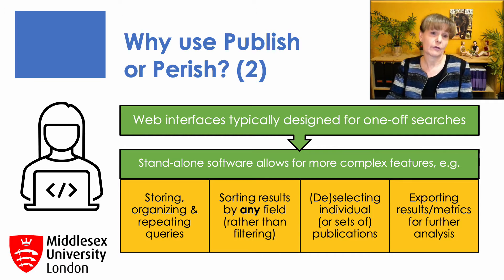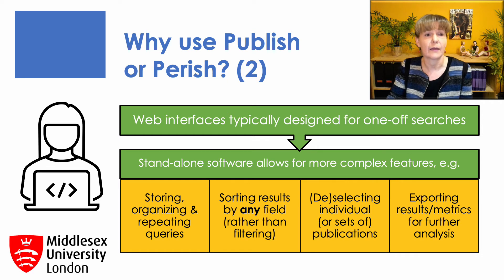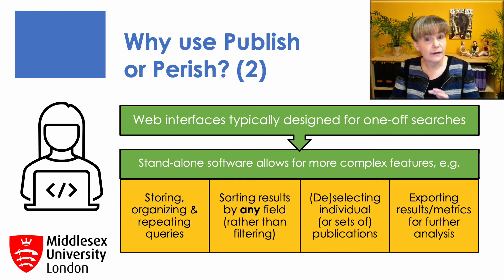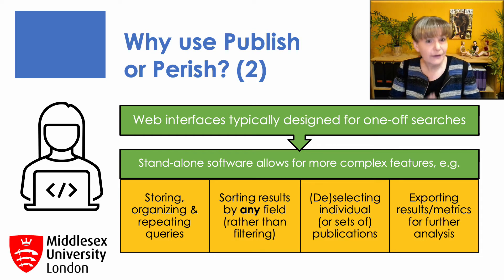Standalone software allows for more complex features. Here are some of the things you can do in Publish or Perish that are not possible or far more difficult in most web interfaces: first, storing, organizing and repeating queries again and again; second, sorting the results by any field rather than filtering them; third, selecting or deselecting individual or sets of publications; and finally, flexibly exporting the results and metrics for further analysis in, for instance, Excel or statistical programs. All this makes Publish or Perish far more suitable for those wanting to do serious and repeated analysis in academia.